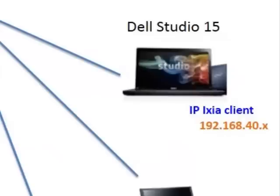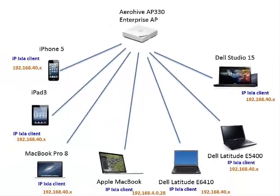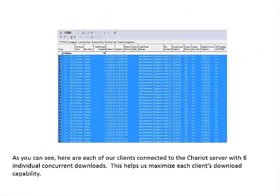Next, we installed an IP Axia client, which was a requirement for testing with iX Chariot. Then we verified the connectivity with our iX Chariot server, which was loaded on the Dell Latitude E6410. Once all end devices were connected to the Chariot server, we replicated each link six times, as shown in this capture. This would maximize our data throughput during the test period.